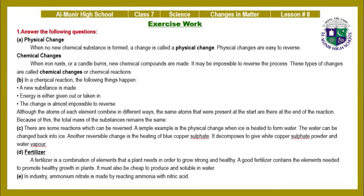Part B — In a chemical reaction: a new substance is made; energy is either given out or taken in; the change is almost impossible to reverse. Although the atoms of each element combine in different ways, the same atoms present at the start are there at the end of the reaction, so the total mass of the substances remains the same. Part C — Reversible reactions: a simple example is ice heated to form water, which can be changed back to ice.